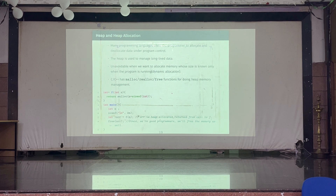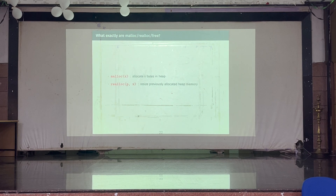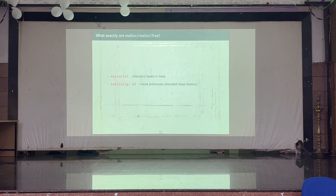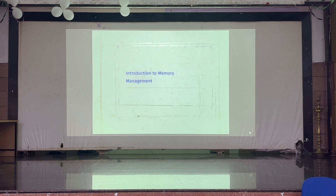C provides three functions mainly for heap allocation and reallocation: malloc, realloc, and free. Malloc(x) will allocate x bytes in the heap and return the address of that allocated memory. Realloc(p, x) — p is a pointer, x is the new size — for a previously allocated pointer p, it expands or reduces the array size. For example, if you allocated an array of size 5 and want size 10, call realloc(pointer, 10). Free returns memory back to the system — you ask for memory, and after you're done you should free it.